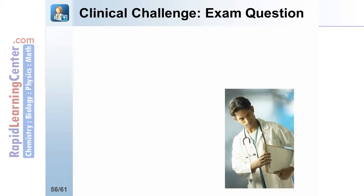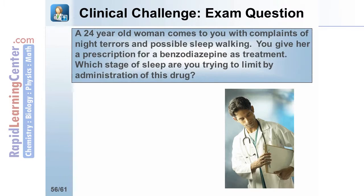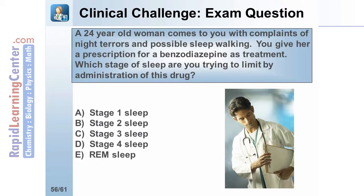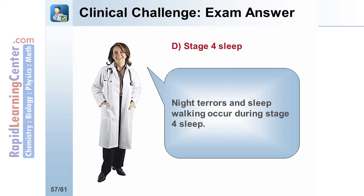Now let's test your understanding of the material with a clinical challenge question. A 24-year-old woman comes to you with complaints of night terrors and possible sleepwalking. You give her a prescription for a benzodiazepine as treatment. Which stage of sleep are you trying to limit by administration of this drug? The answer is D, stage 4 sleep. Night terrors and sleepwalking occur during stage 4 sleep.